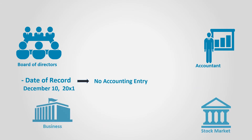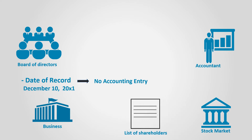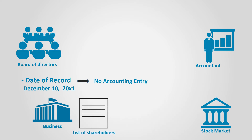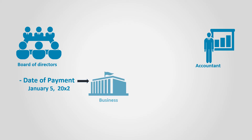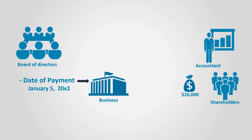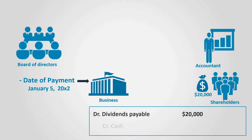No entries are required on the date of record. The only important issue is to get the list of shareholders who own the shares on that date. The importance of the shareholders list is that the business will know to whom it will pay the dividends. So, dividends will be paid to whoever owns a share on December 10. The date of payment is important, as the business will pay the dividends in cash. This transaction must be recorded: dividends payable is debited to reduce the liability and credit cash for $20,000.